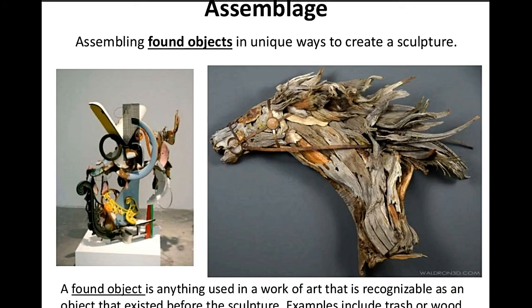Assemblage — from the word assemble — involves assembling found objects in unique ways to create sculpture. A found object is anything used in artwork that is recognizable as an object that existed before. Examples include truss, wood, or metal.